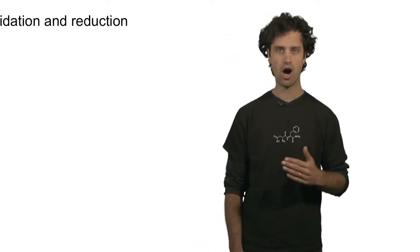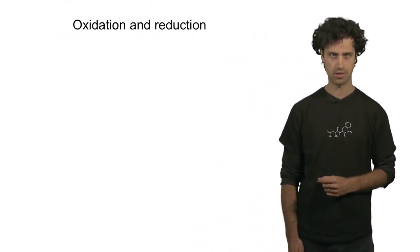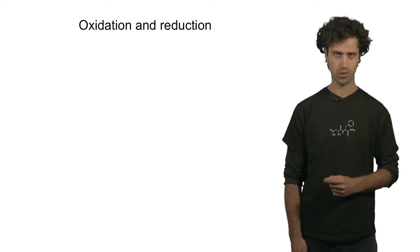In a previous segment, we talked about acid-base reactions, where a proton is transferred from an acid to a base. In this segment, we'll focus on a different class of chemical reactions. In this reaction, a proton is not transferred, but electrons are transferred from one species to the next. This class of chemical reactions is called oxidation-reduction reactions, or redox for short.